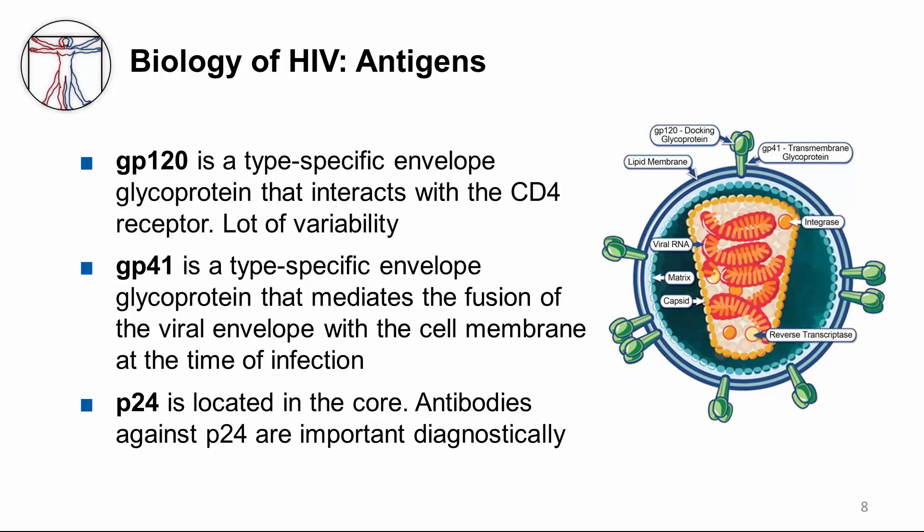P24 is encoded by the structural gene GAG. Unlike GP120, P24 is not variable. P24 is important because we detect antibodies to P24 using an enzyme-linked immunosorbent assay, or ELISA test, with a confirmatory Western blot test.